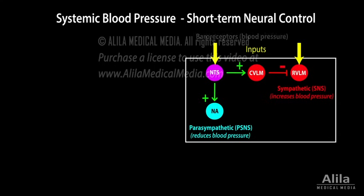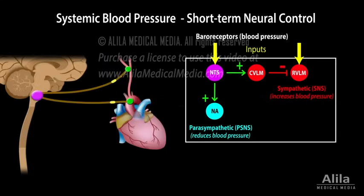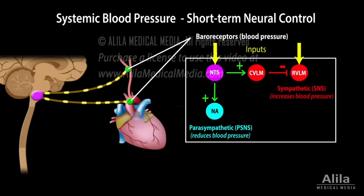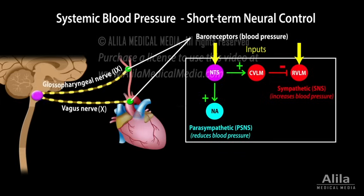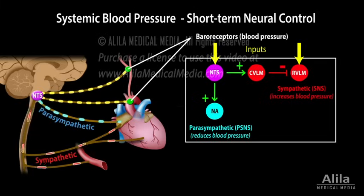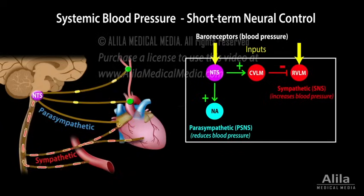Most prominent inputs are from baroreceptors, which detect changes in blood pressure. Baroreceptors are stretch receptors located mainly in the wall of the aortic arch and carotid sinus. Increased blood pressure stretches blood vessel walls, causing baroreceptors to fire action potentials at a higher than normal rate. These signals are sent via the vagus and glossopharyngeal nerves to the solitary nucleus, the NTS, of the cardiovascular center. In response, the center activates the PSNS and inhibits the SNS, bringing blood pressure back down to normal level. The reverse happens when blood pressure decreases.